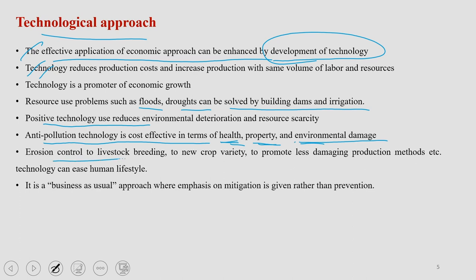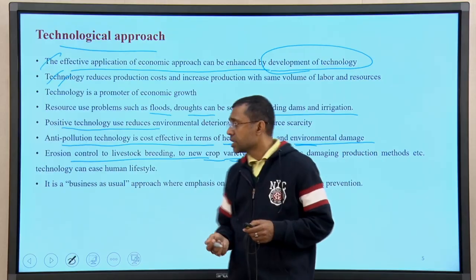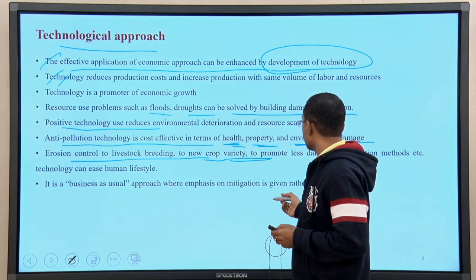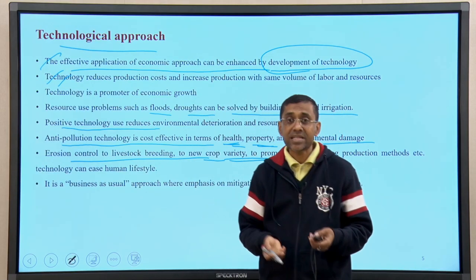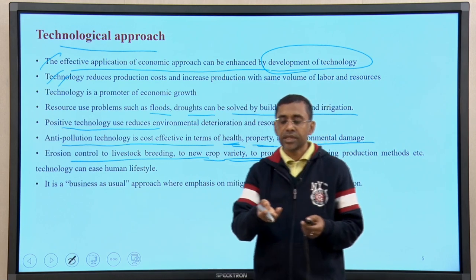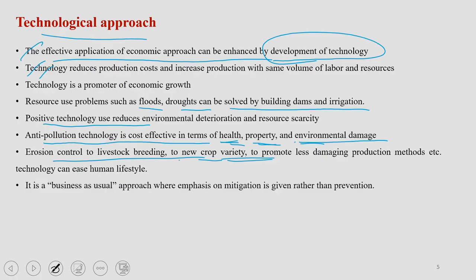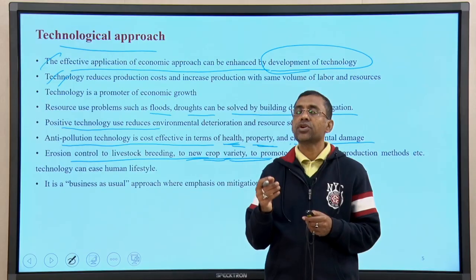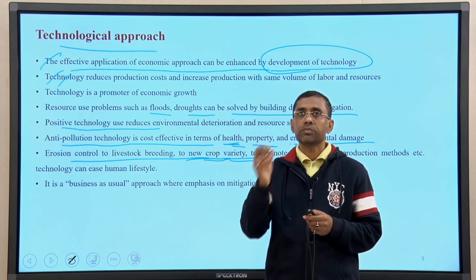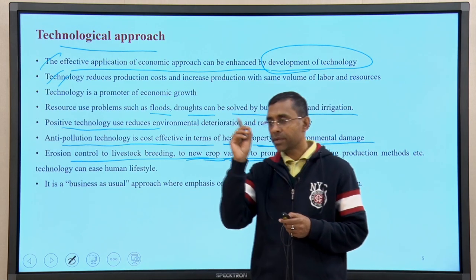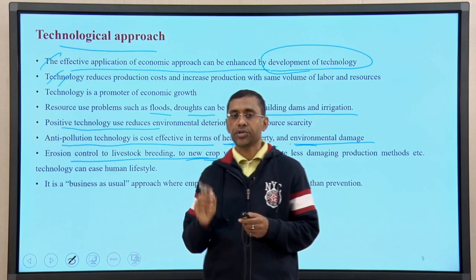There are various other roles of technology, like new crop varieties. Suppose you produce a crop variety which requires less water — then you are going to save an important natural resource: water. Advancement of technology would basically enhance the efficiency of resource management from both an economic and an environmental point of view.